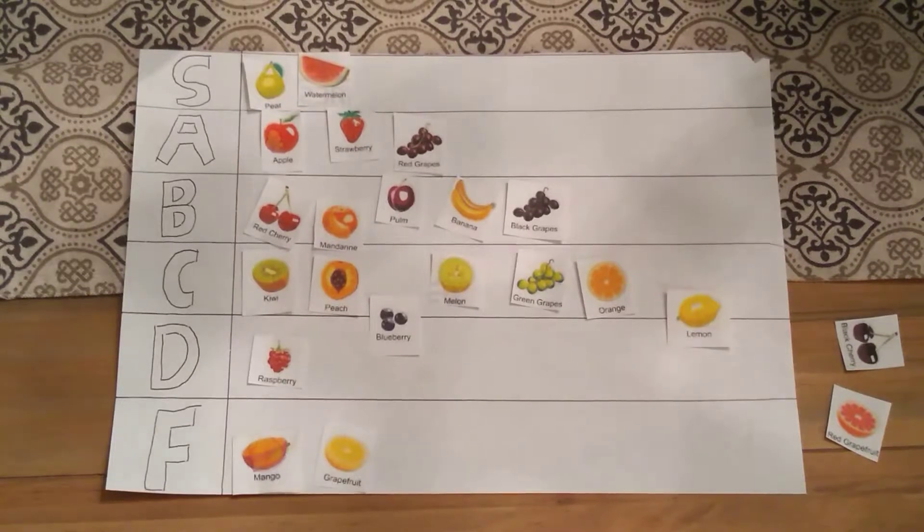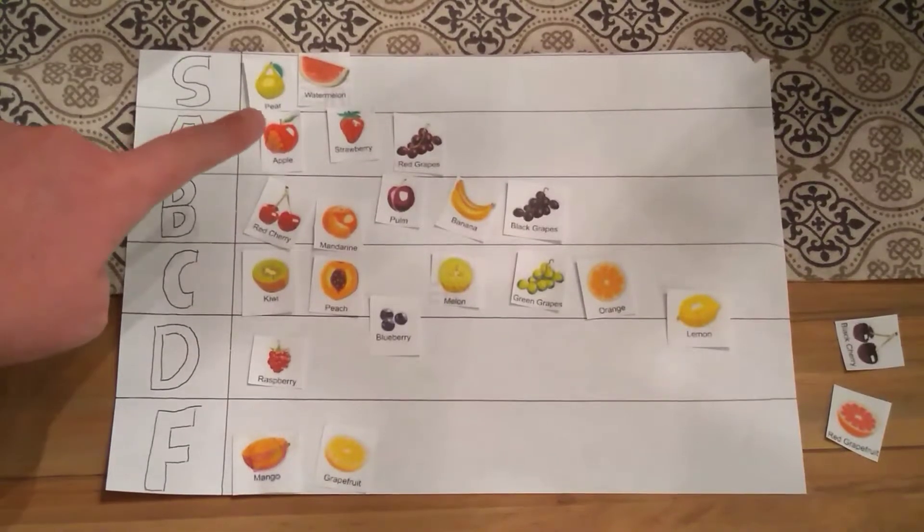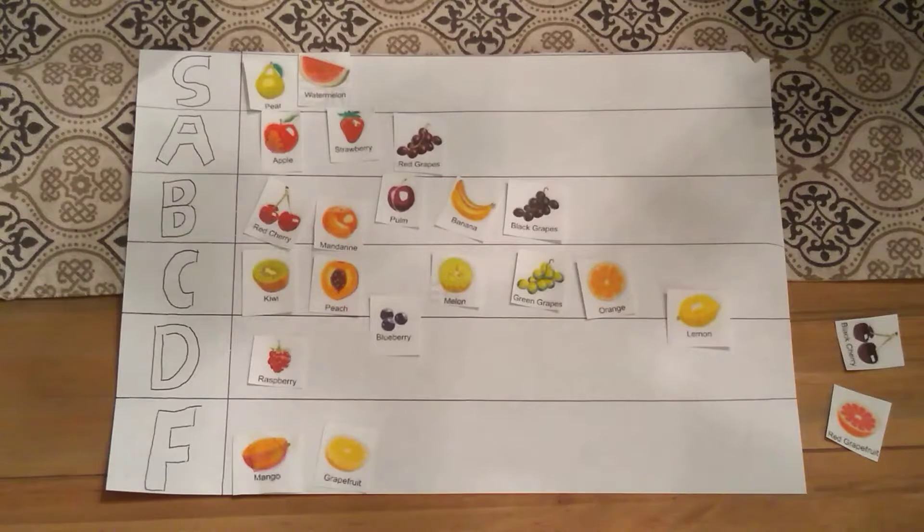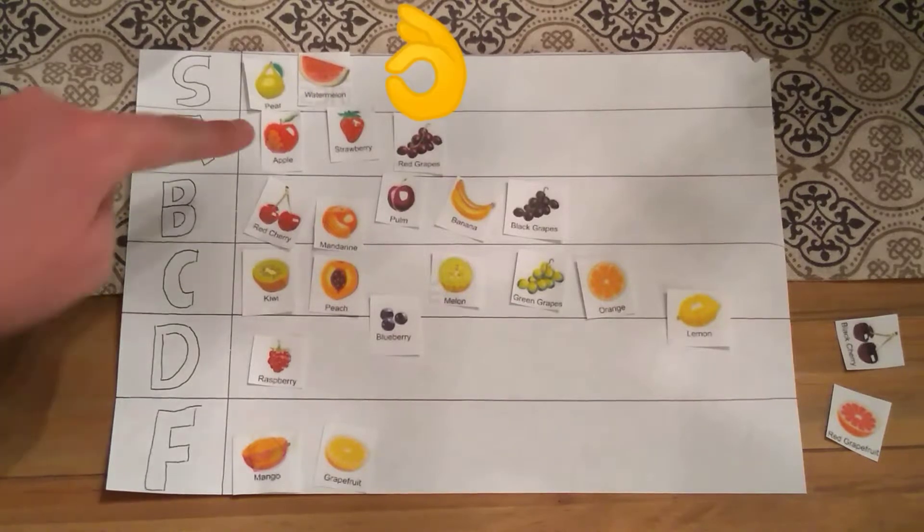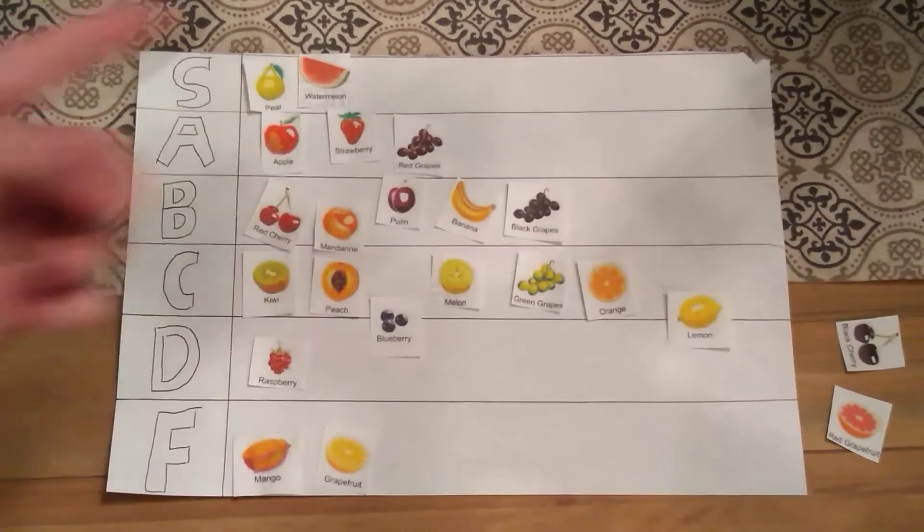And there you go. To recap, we got pear and watermelon in the top tier. Which are amazing. Apple, strawberry, and red grapes in the A tier. Because they're pretty good.